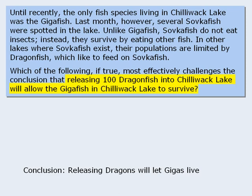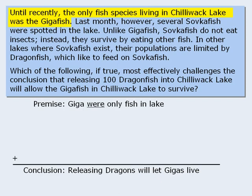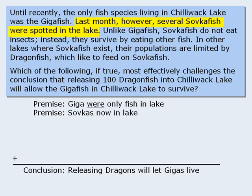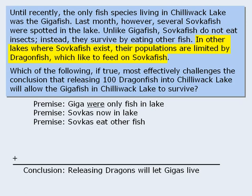Now let's look for supporting evidence. First, the Gigafish used to be the only fish species in Chilliwack Lake — we can summarize that here. Next, Sofka fish were found in the lake last month. Then, Sofka fish survive by eating other fish. And finally, in other lakes, dragonfish limit the Sofka fish population by eating them. So we can summarize this, and the basic structure of the argument looks something like this.